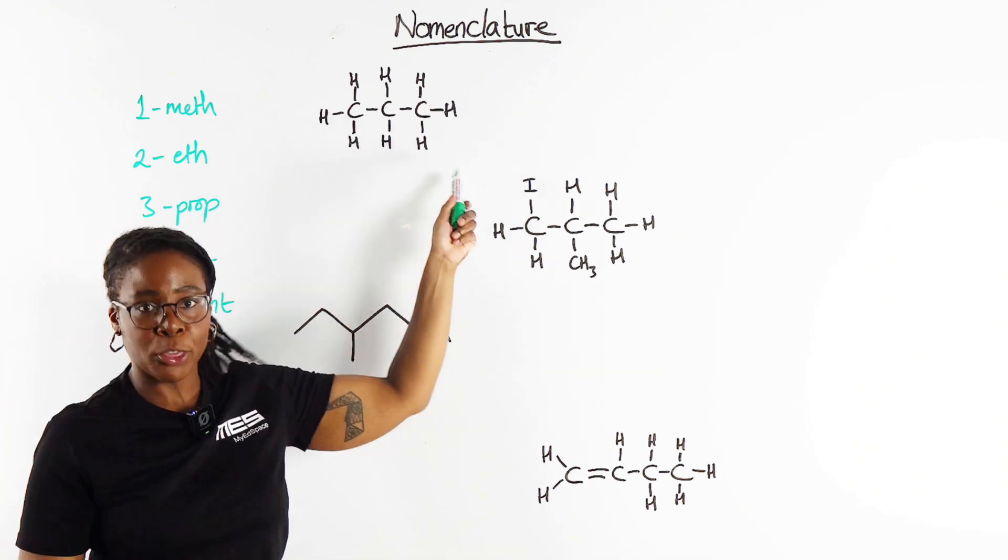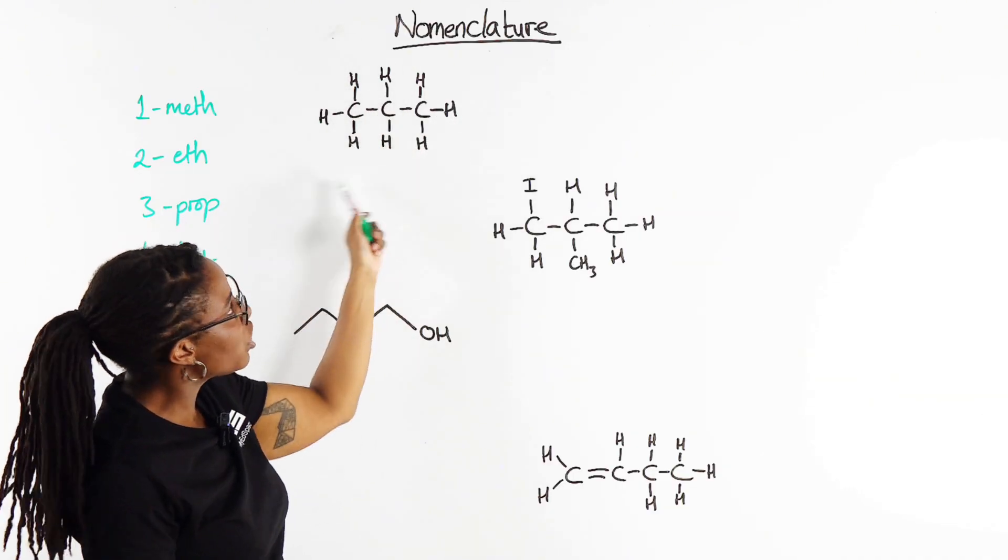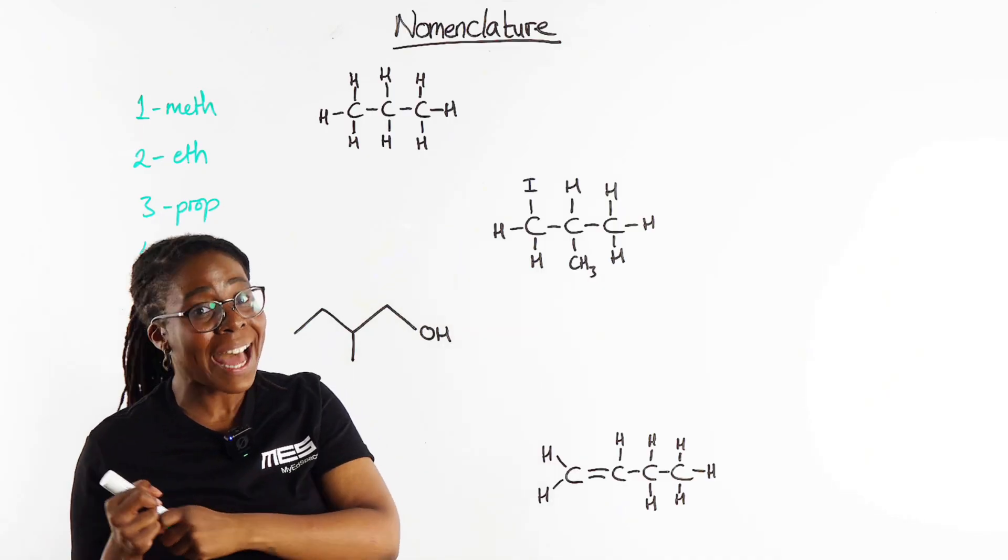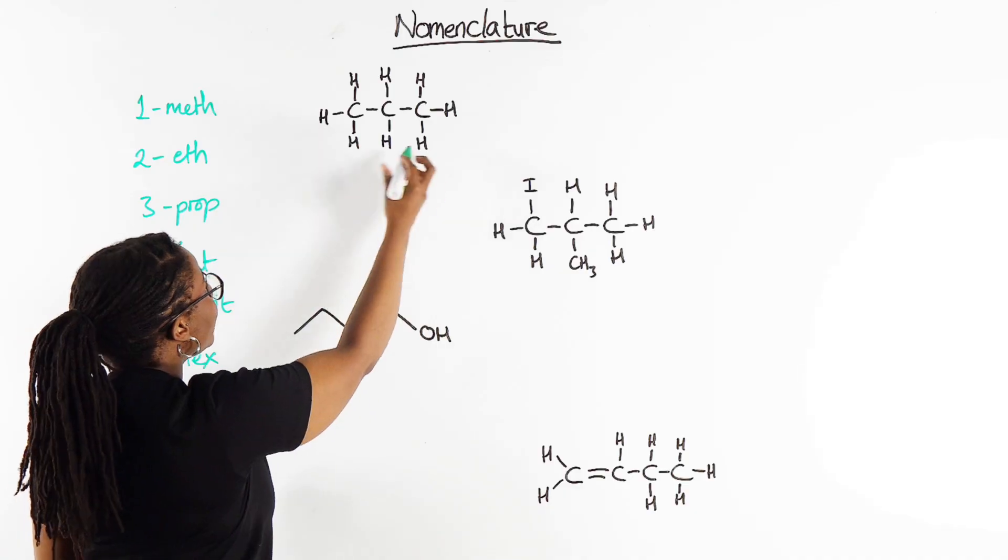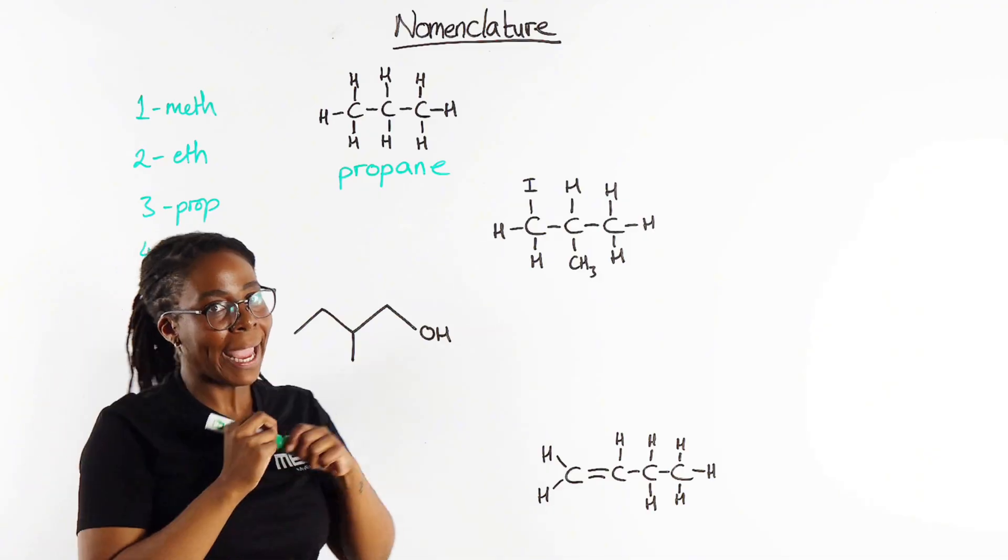So we'll start with the simplest up here. We have got a three carbon chain, just carbon-carbon single bonds and just hydrogens around it, so no fancy functional group which means this is of course an alkane, so for a three carbon alkane that will be propane. But you knew that one already.